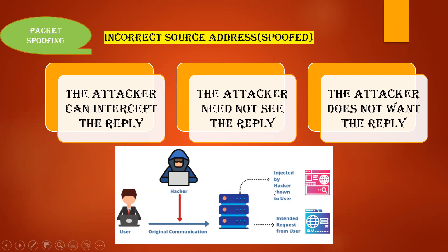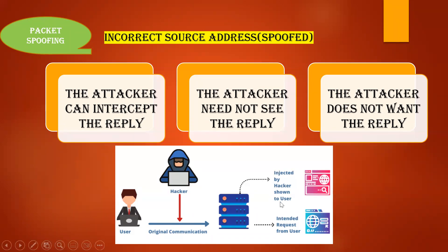This attacker is not concerned about the reply from the other end — he doesn't want any reply to be received. The incorrect source address used here means spoofing is occurring. The attacker can intercept the reply, cut it down, and doesn't care what reply is coming from the server end or user end. He simply attacks whatever data is passing through the transmission line. This is known as packet spoofing.